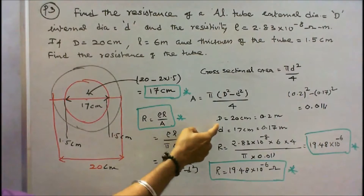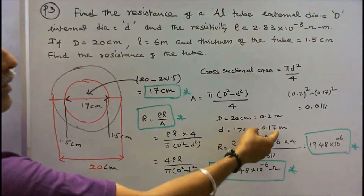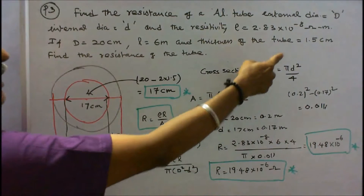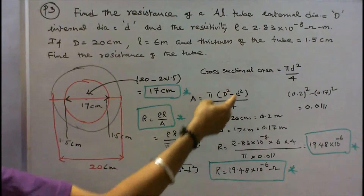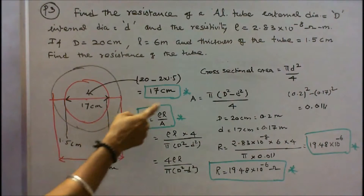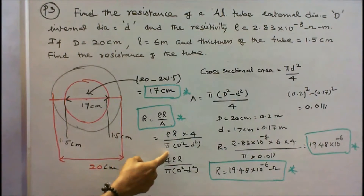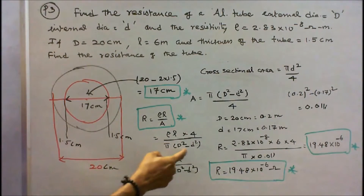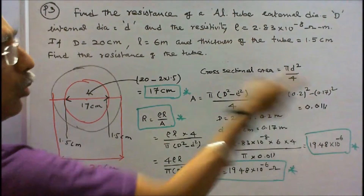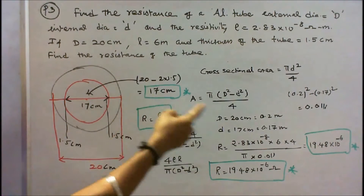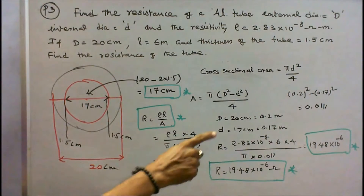Converting: D = 0.2 m and d = 0.17 m. The cross-sectional area A = π(D² − d²)/4. Using R = ρL/A, rewritten as R = ρL × 4 / [π(D² − d²)], and computing π(0.2² − 0.17²) = 0.111, the resistance comes out to R = 19.48 × 10⁻⁶ ohms.